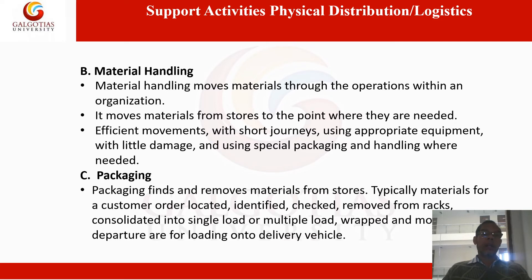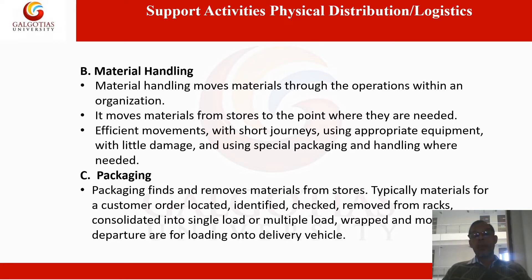Another support activity is materials handling, which has two parts. When finished goods are produced from the manufacturing plant, they are handled by material handling equipment — different types of which we have already studied in matrix management. They need to be moved to the finished goods warehouse where they are stocked. Once a customer order is received, they need to be picked up, handled again, and brought to the staging area or packaging area.